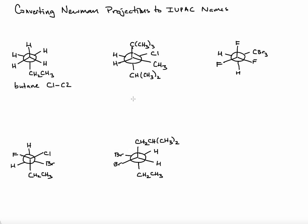Let's draw a carbon-carbon bond, using the left carbon as the front carbon and the right carbon as the rear carbon. Converting to the wedge-dash formula, we have a methyl group coming out towards us drawn as a wedge, and the hydrogen behind as a dash. Then we have the tert-butyl group on the front carbon — that carbon is bonded to four methyl groups, which makes it a tert-butyl group.